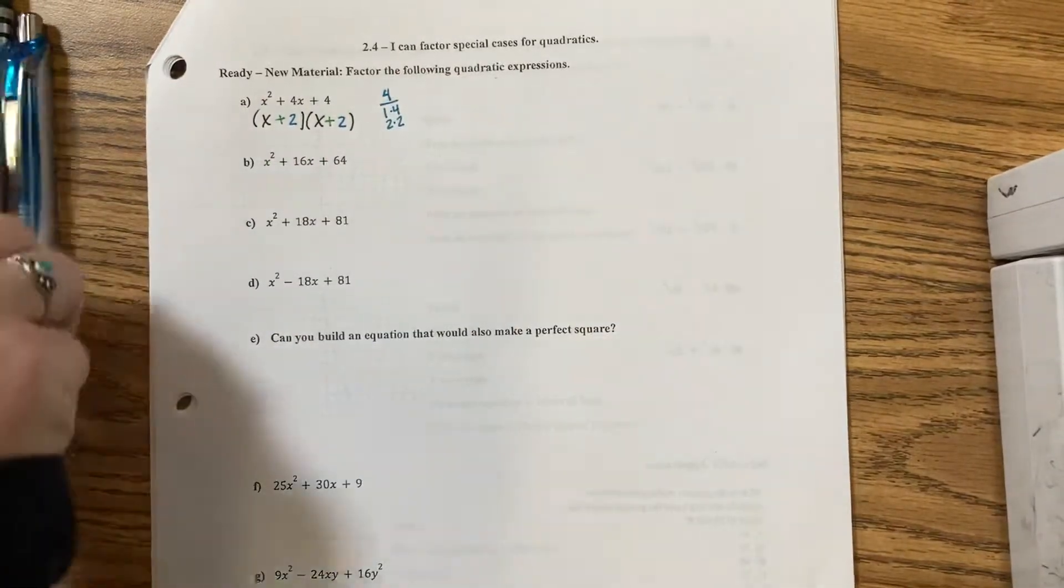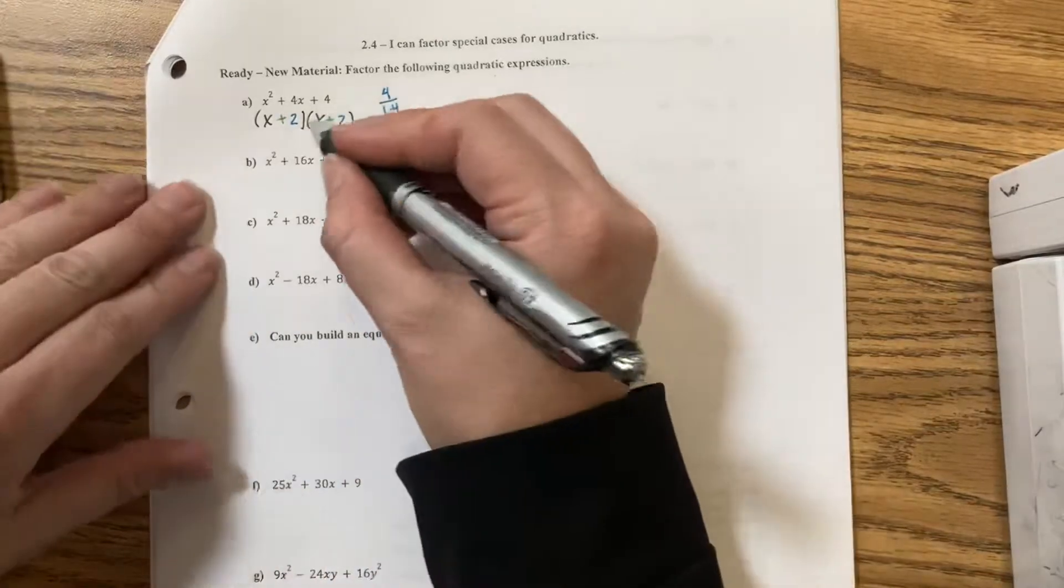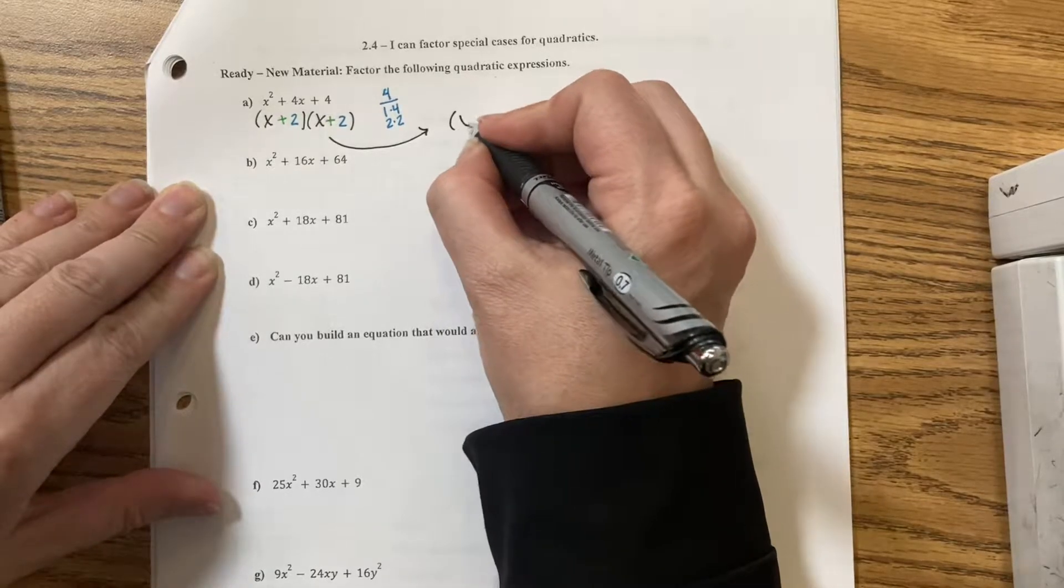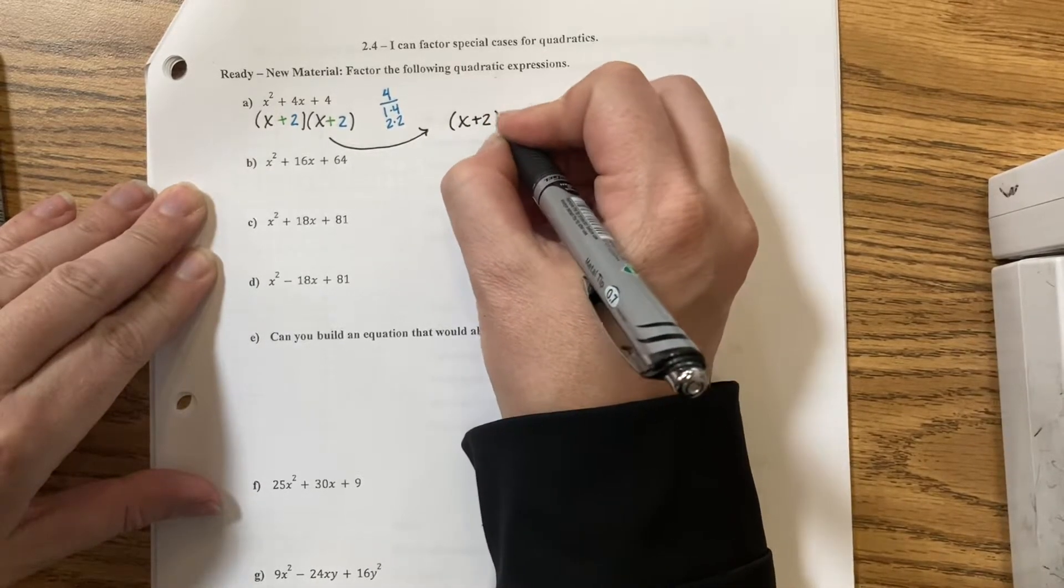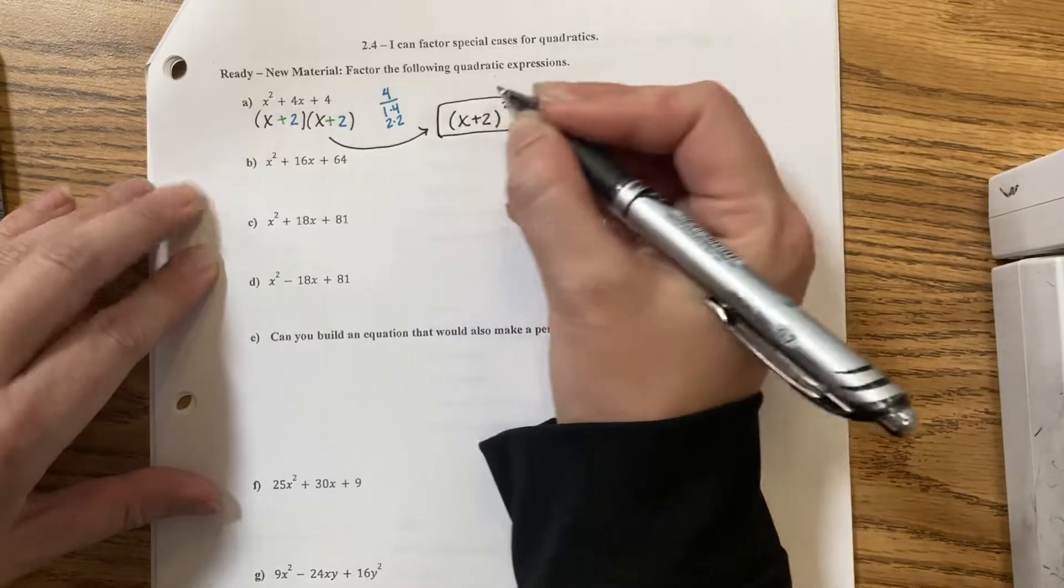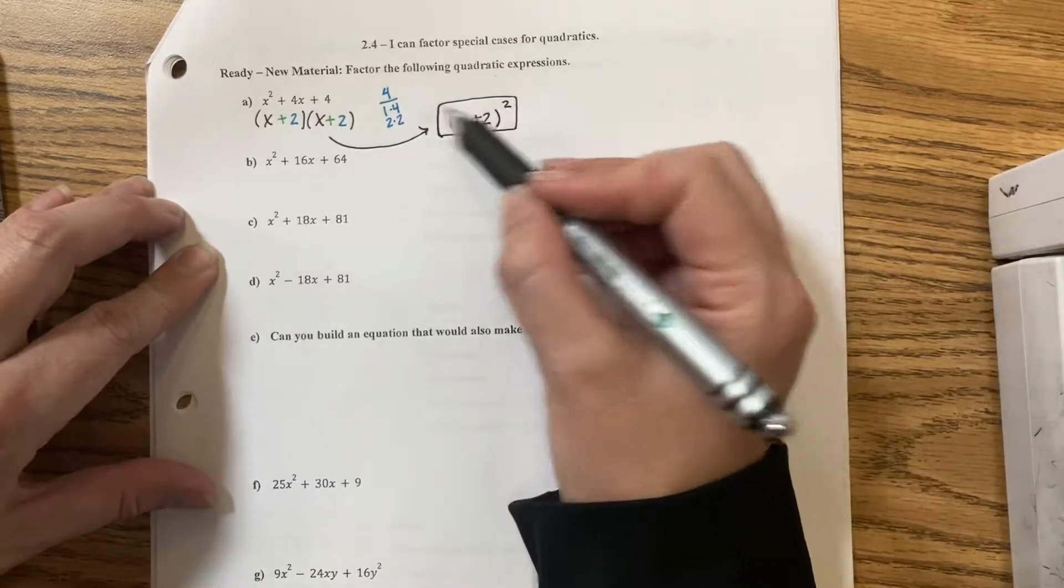Now this is called a special case because they're two of the same factors. So if I want a shortcut, I can write x plus 2 squared because there are two of the same.